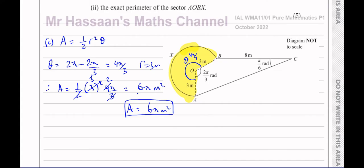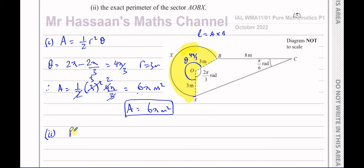Part 2 asks for the exact perimeter of sector AOBX. Some of you might wonder whether to include the dotted lines in the perimeter — yes, we do include them when considering just the sector. If they asked for the perimeter of the whole shape, we wouldn't include those two lines since they'd be inside the shape. But for the sector's perimeter, we include those two radii plus the arc length AXB.